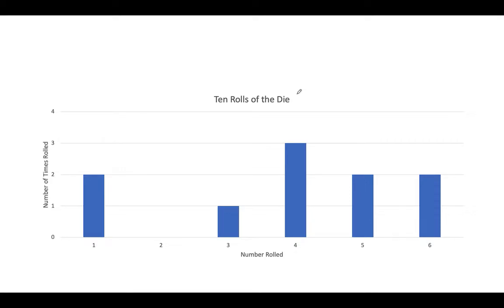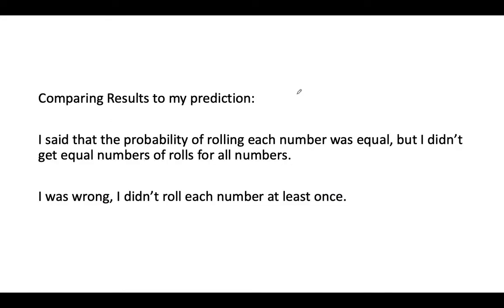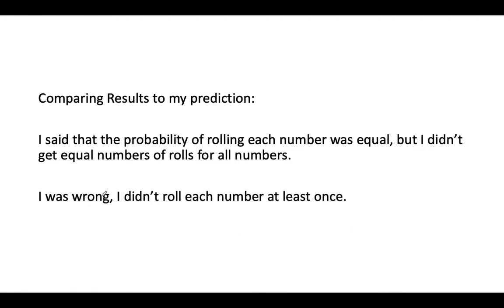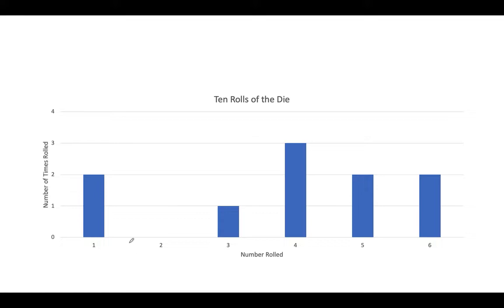So I've done my experiment, I can now look back at my prediction and compare my prediction to my results. So what did I find out? So I had said that the probability of rolling each number was equal, because I thought that the die has six numbers and I should get equal results. But I didn't get equal numbers for all of the rolls. I got some equal - for one, for five, and for six, I rolled each of those twice, two times. But for the other numbers, they're different. And for the other part of my prediction where I said I thought I would roll each number at least one time, I was wrong. I didn't roll any twos, but I was close.